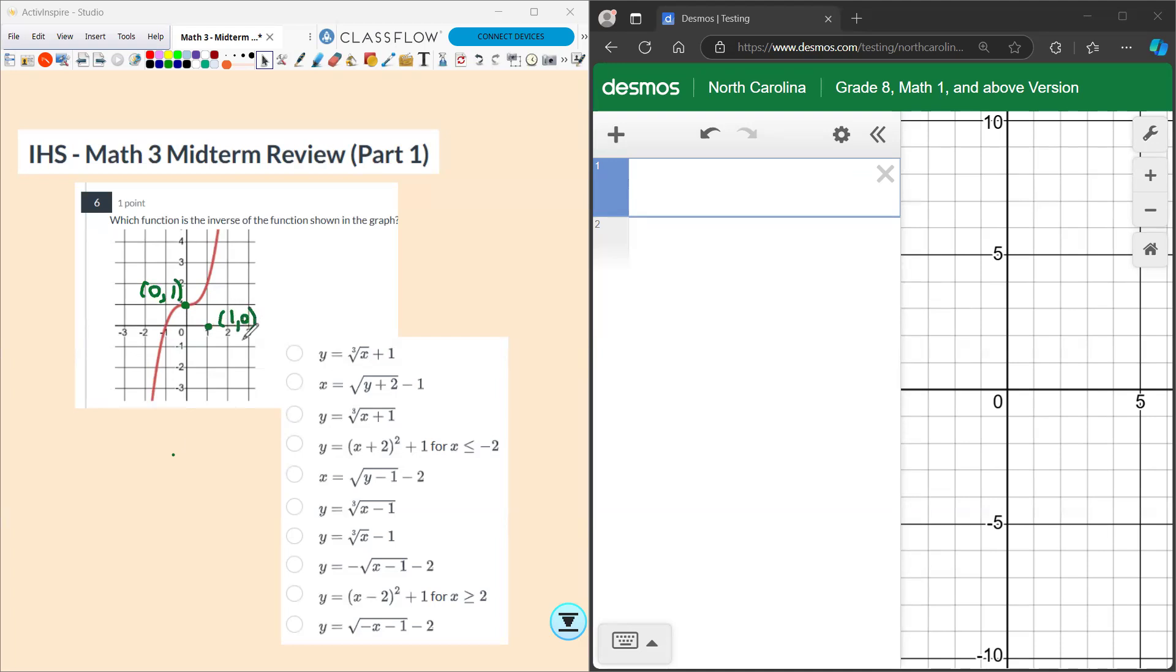Remember x's and y's switch each other in inverses. We can get a couple other points too. This would be (-1,0), so then I want to go to (0,-1).